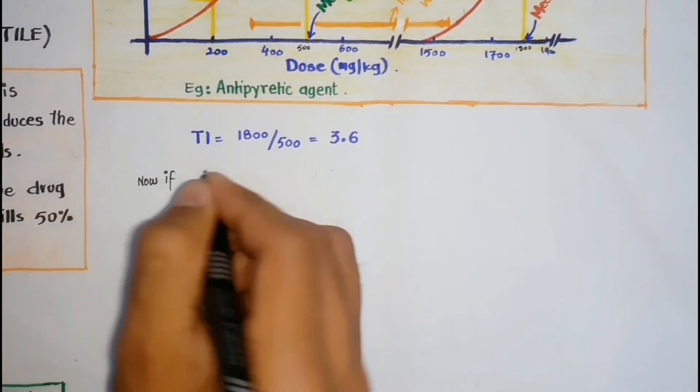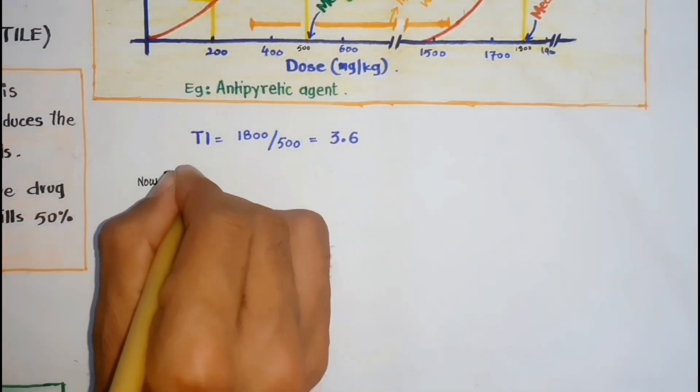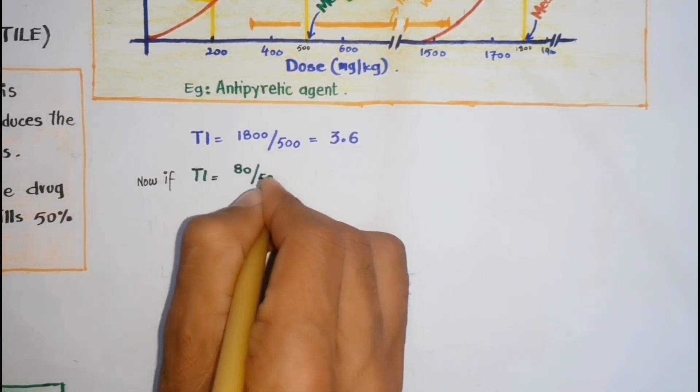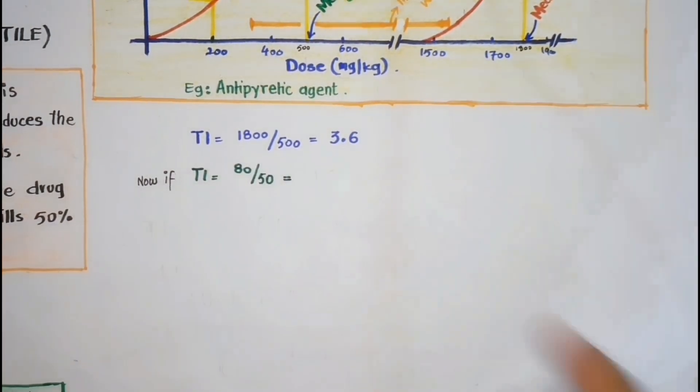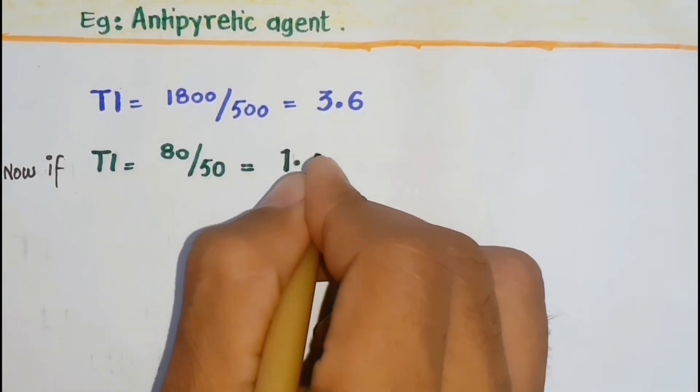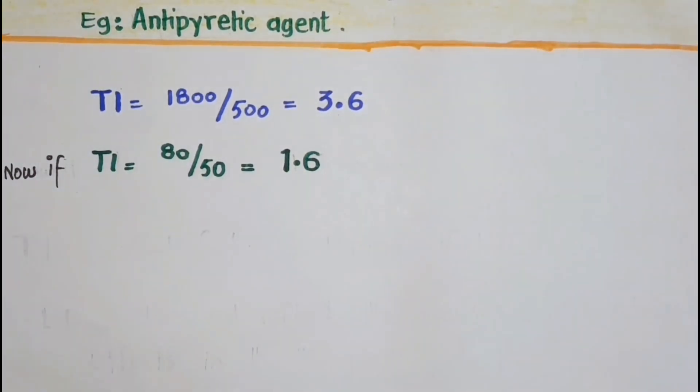Now, if a drug has LD50 equals to 80 and ED50 equals to 50, then the therapeutic index for this agent is 1.6, which is lower than the first one.